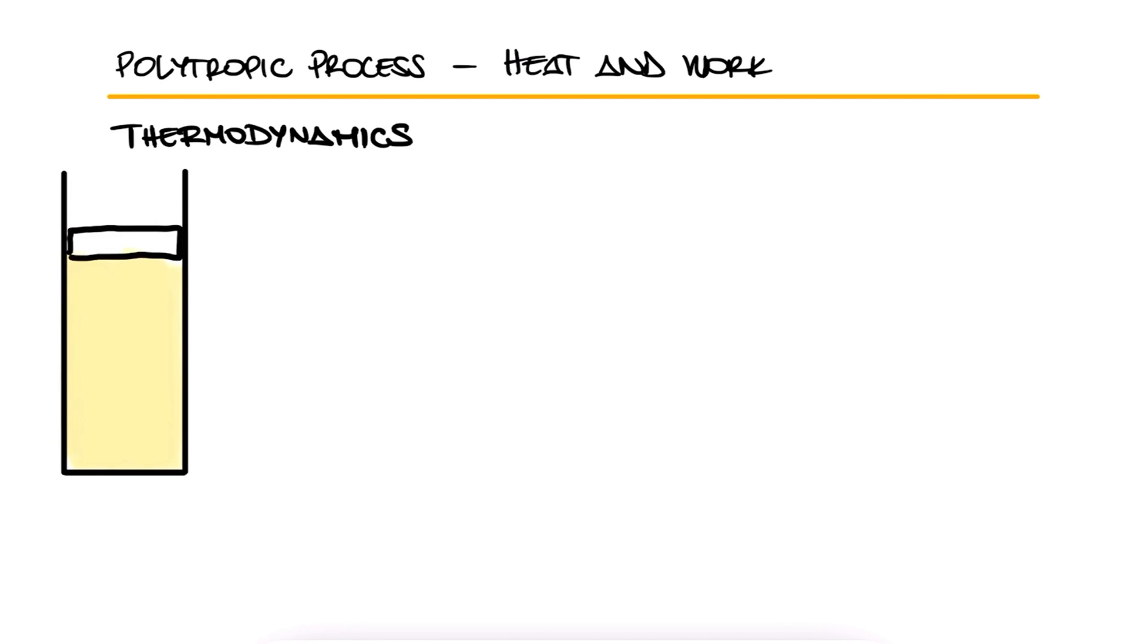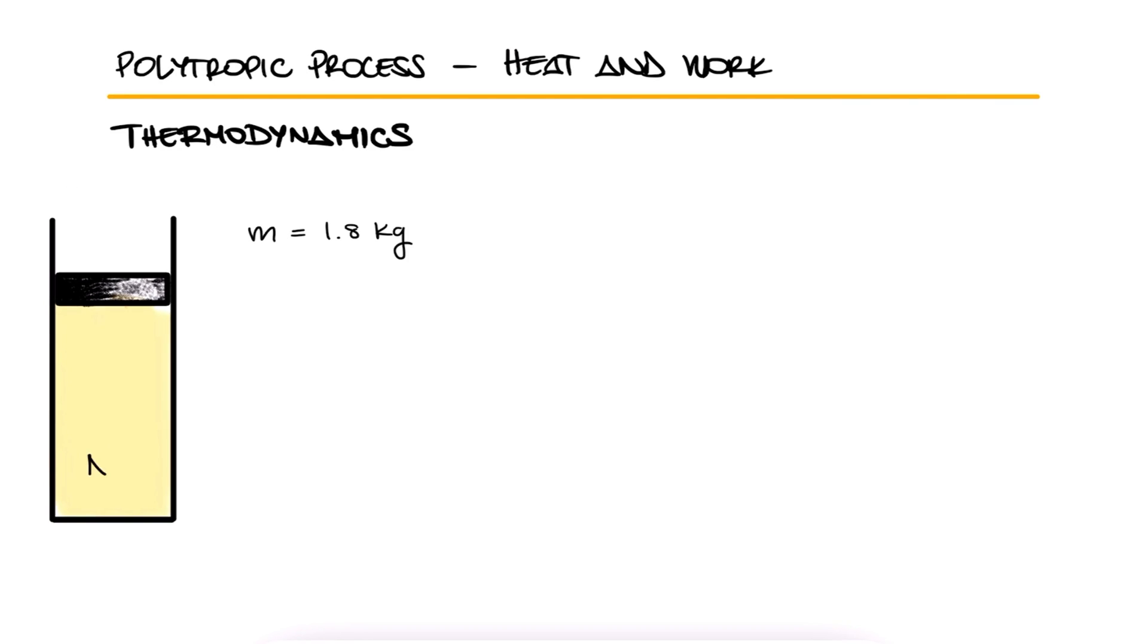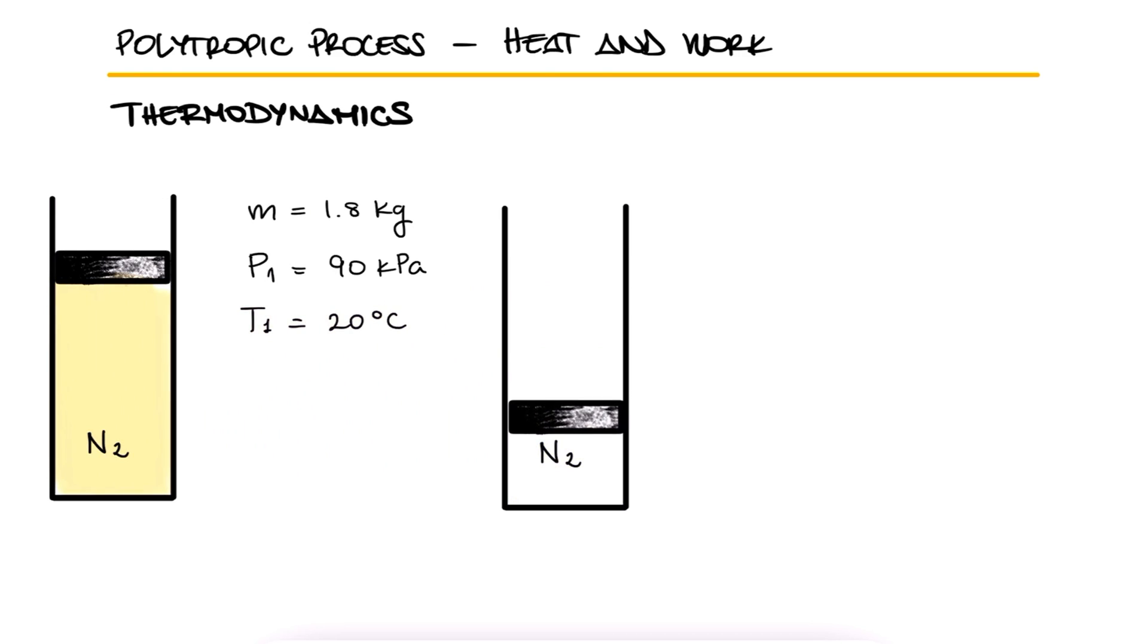A piston-cylinder device contains 1.8 kilograms of nitrogen, initially at 90 kilopascals and 20 degrees Celsius. The nitrogen is now compressed slowly in a polytropic process with a polytropic index of 1.3 until the volume is reduced to one-third. Determine the work done and the heat transfer for this process.